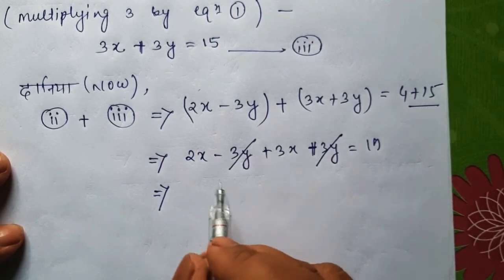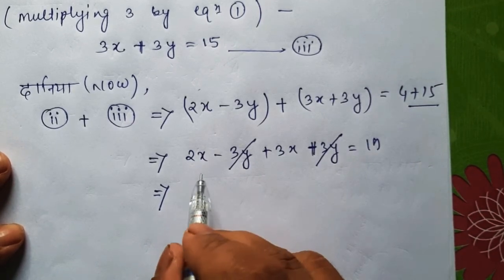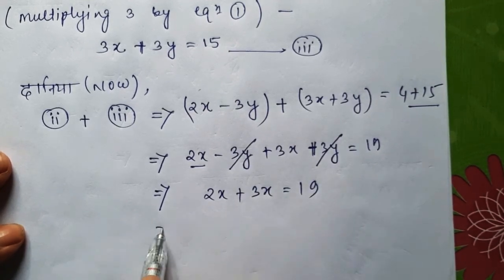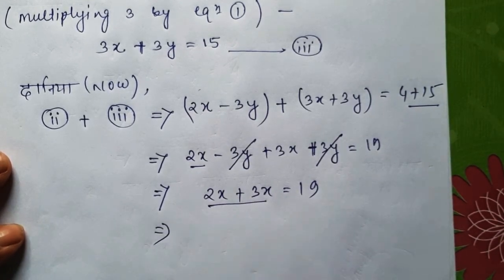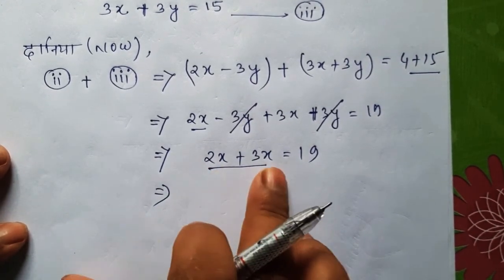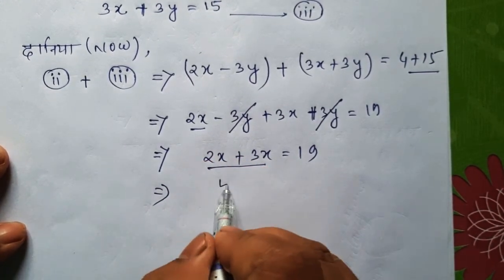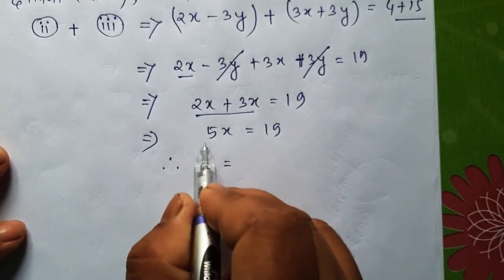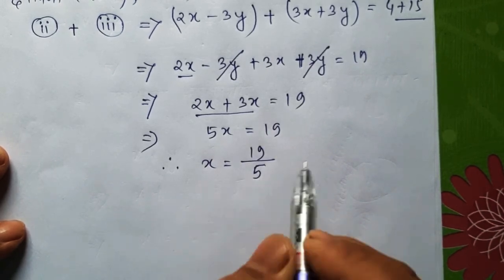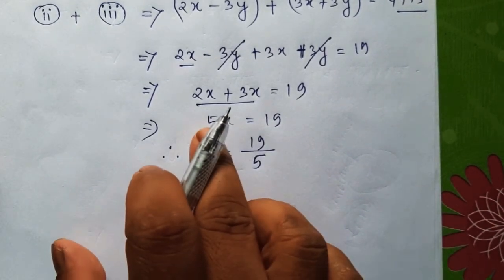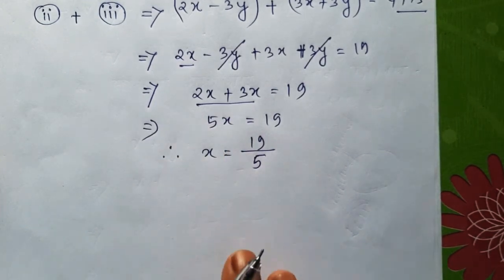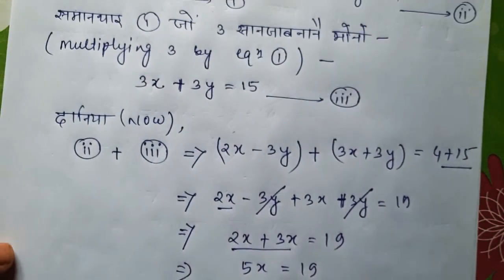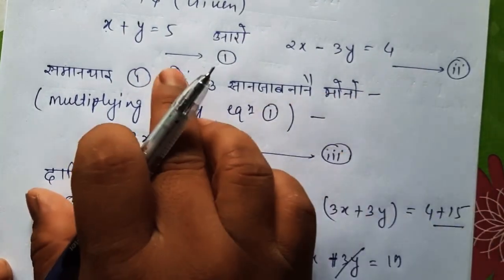When minus 3y and plus 3y cancel, we're left with 5x equals 19. Therefore, x equals 19 divided by 5. So x is 19/5.